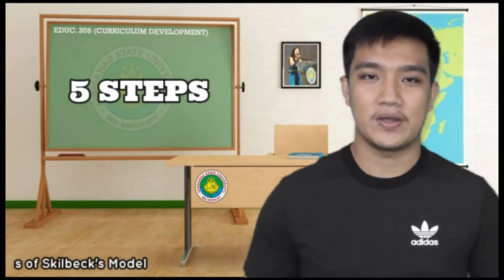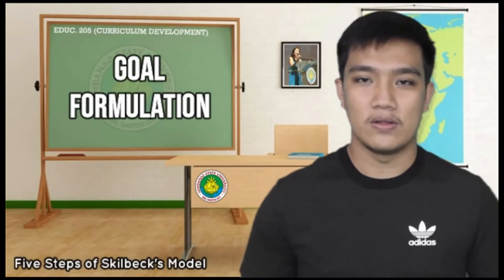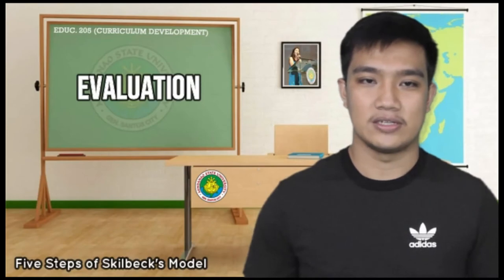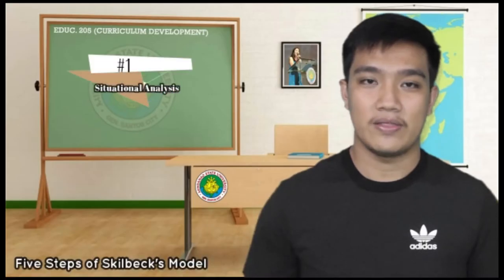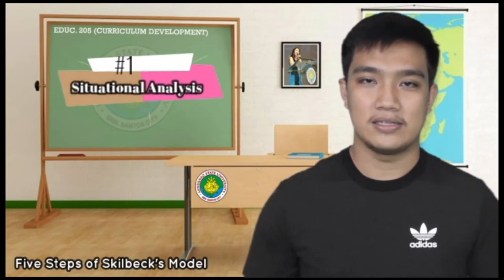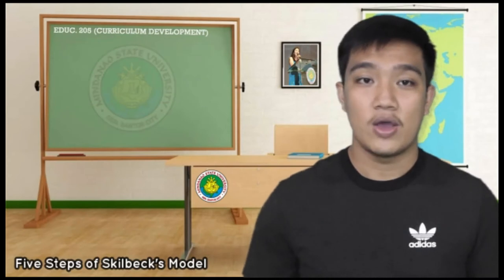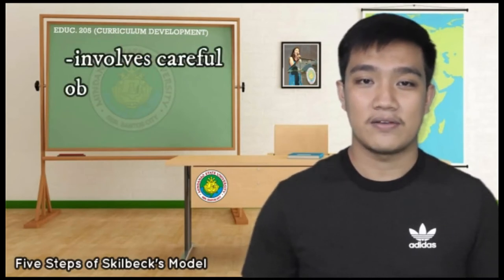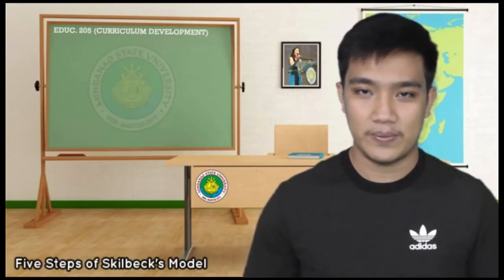The model claims that for school-based curriculum development to work effectively, five steps are required: situational analysis, goal formulation, program building, interpretation and implementation, and evaluation. Situational analysis is the process of examining factors that exist in the environment or society where the curriculum is going to be implemented. This involves careful observation and analysis of the situation or environment.